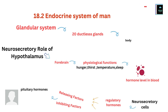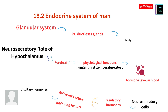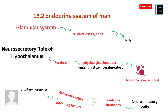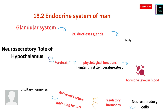The hypothalamus is a part of the forebrain. It regulates a wide spectrum of physiological functions such as hunger, thirst, sleep, and temperature. It also monitors the metabolites and different hormonal levels in our blood. The hypothalamus is called the master control center of the endocrine system.